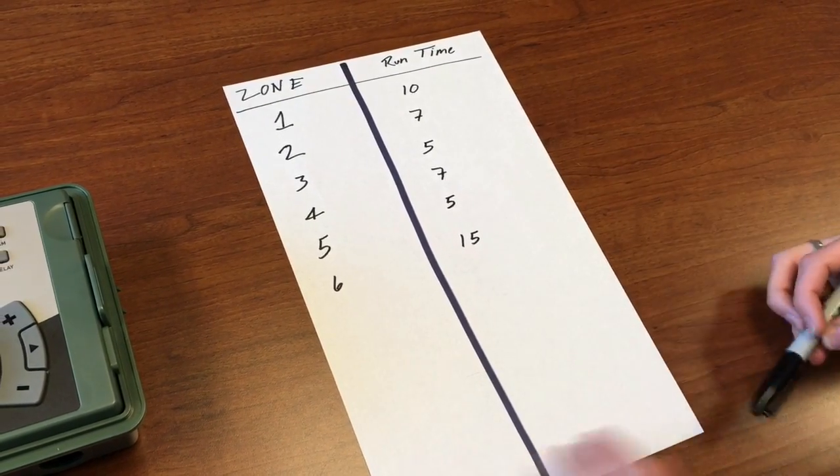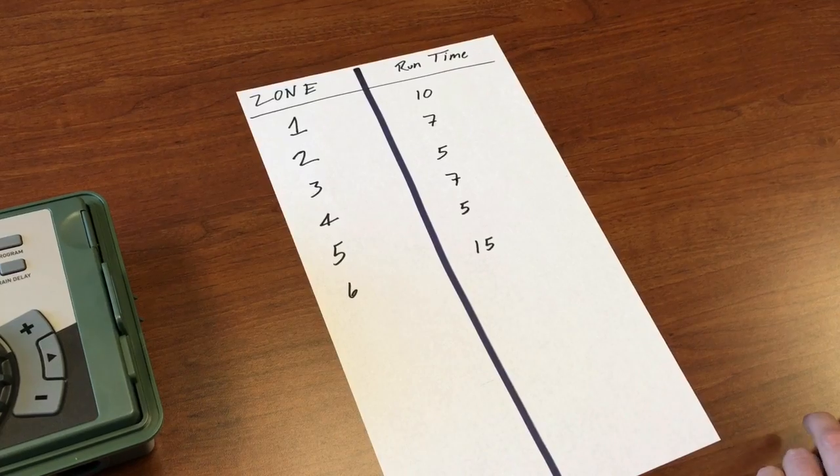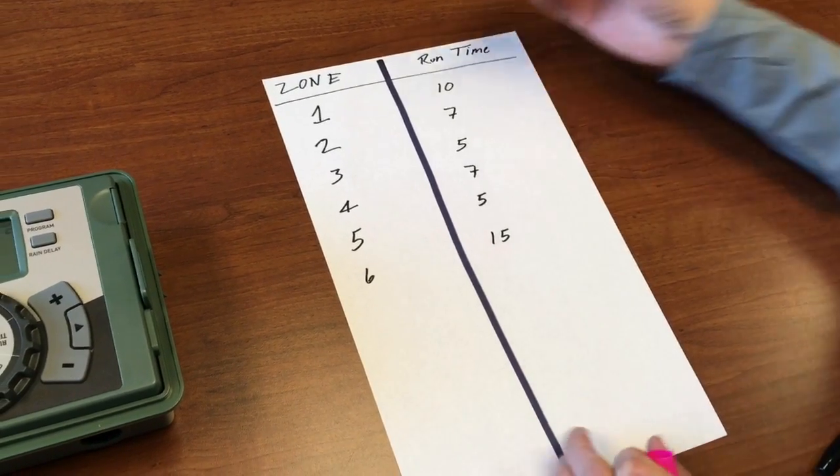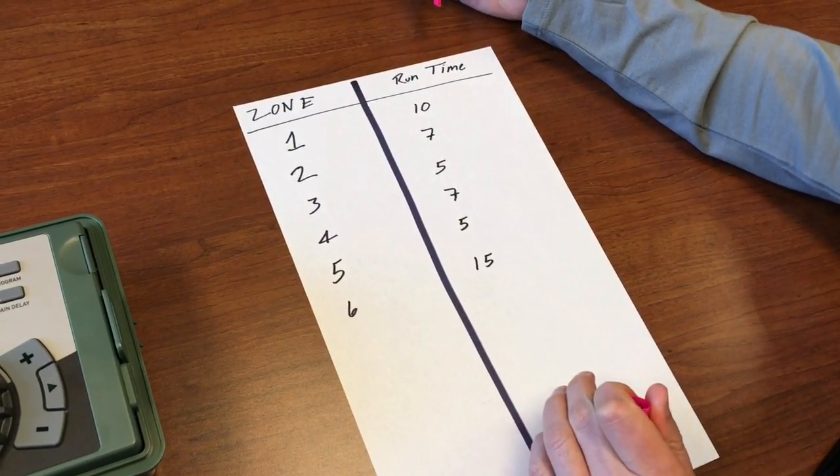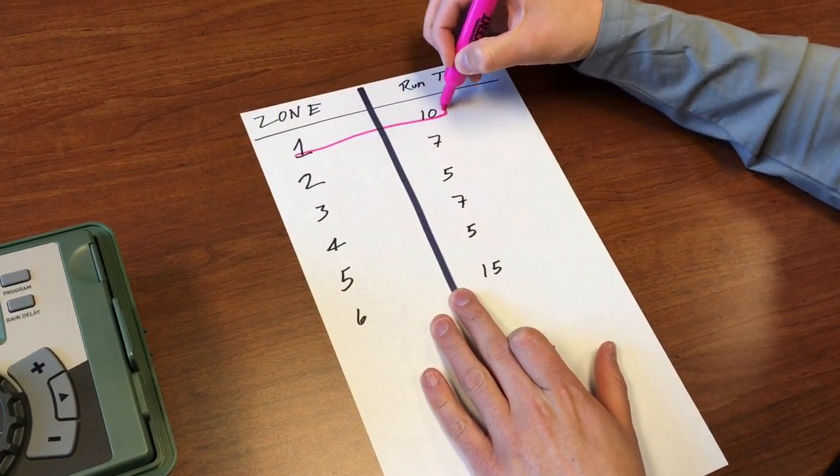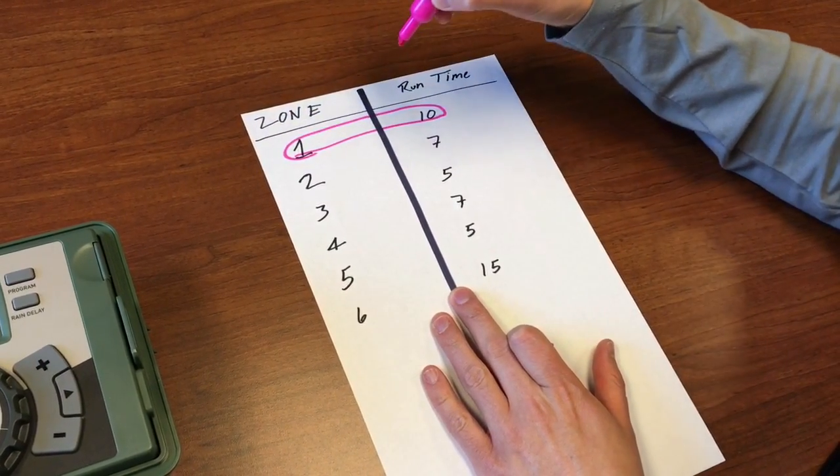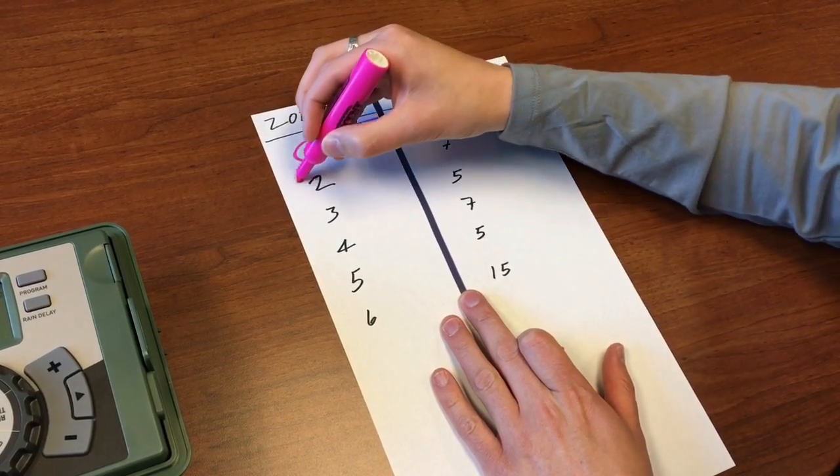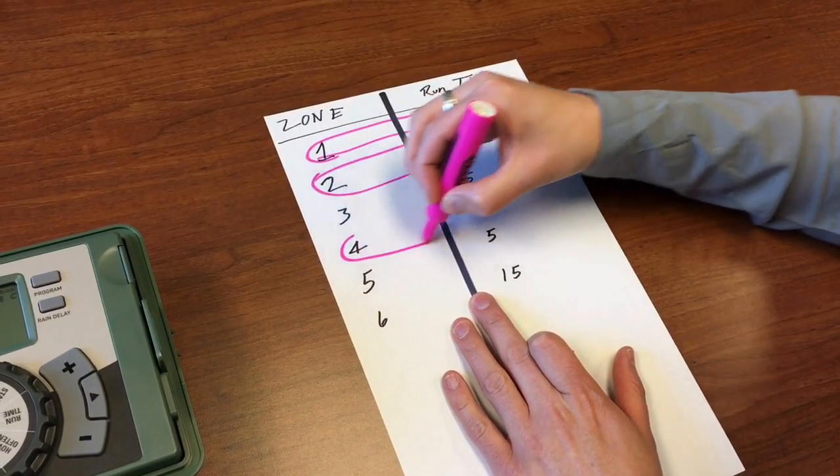We've decided that zones one, two, and four need to run every other day. They need to run for this amount of time - ten minutes for example in zone one - but it needs to run every other day.